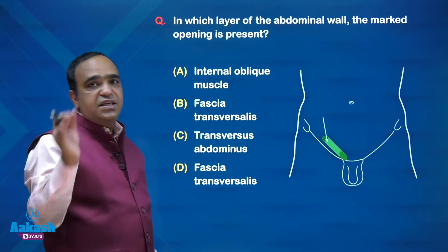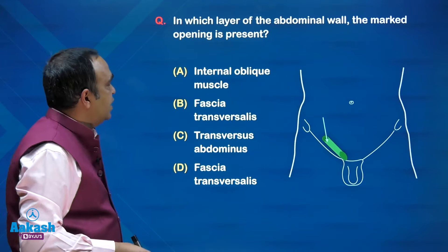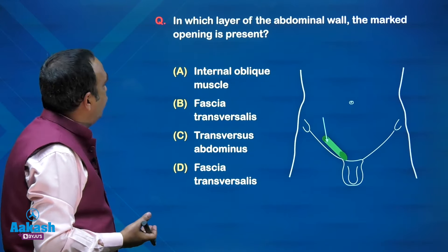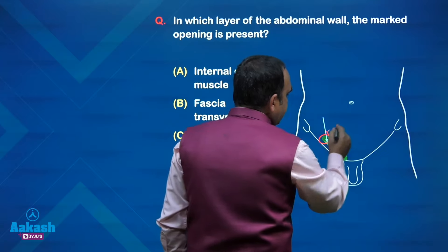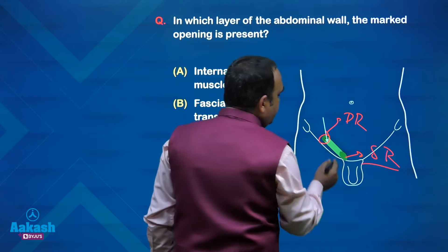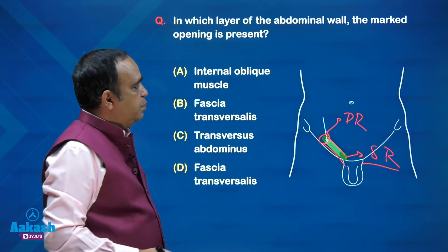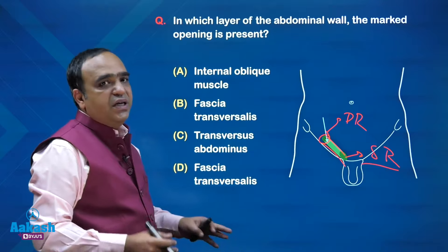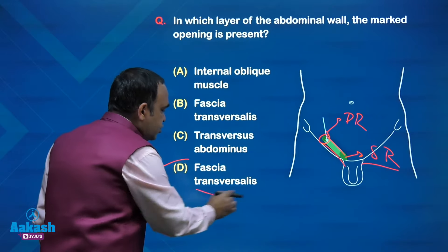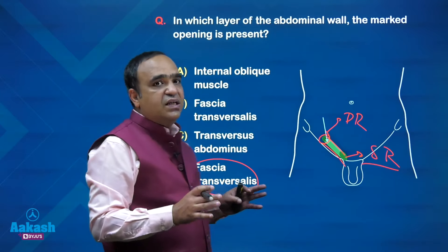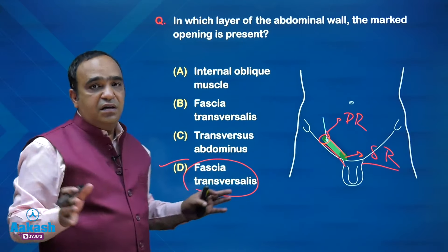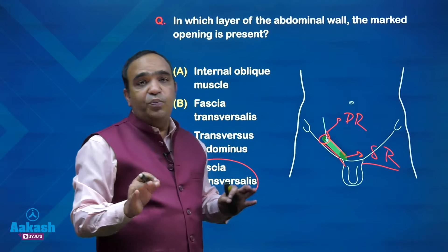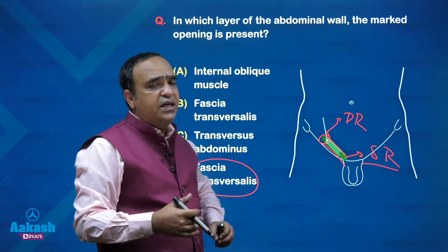In which layer of the abdominal wall is the marked opening present? The picture shows the right inguinal canal with the deep ring marked. The deep ring is situated in the fascia transversalis — it is an oval opening, half an inch above the mid-inguinal point. The superficial ring is a triangular opening in the external oblique aponeurosis, approximately 1 cm above and lateral to the pubic tubercle.